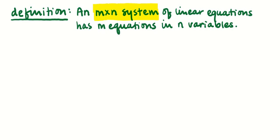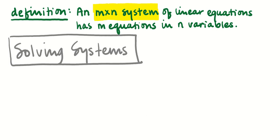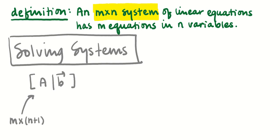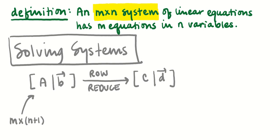An m by n system of linear equations has m equations and n variables. We take the same set of steps to solve these: we start by cooking up an augmented matrix — A augmented with b. If we've got an m by n system and we augment with an extra column, that gives us an m by n+1 matrix. Then we do row reduction to get a matrix in reduced echelon form, which I'll call C augmented with d. Applying standard row operations, these have the same solution set.